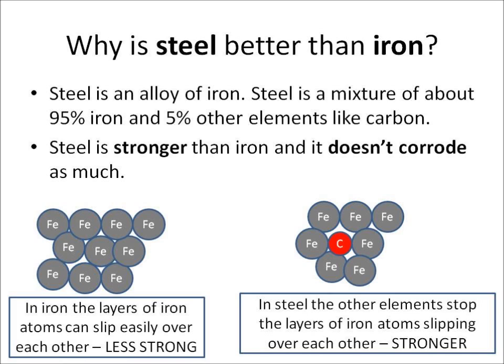Why is steel stronger than iron? With pure iron, all the atoms are the same size, so they can slip over each other. But with an alloy, you've got at least two different elements — for example, iron and carbon — and because the atoms are different sizes, they can't slip over each other as easily, and that makes it stronger.